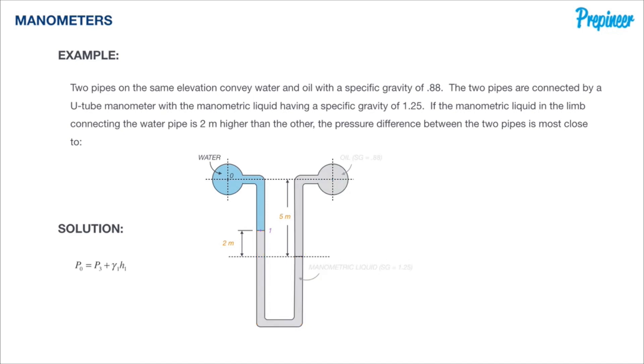From point zero we will be descending to point one at the top of the manometric liquid. Our pressure-height relationship tells us that with the negative elevation change we will be increasing the pressure. Hence we will be taking the specific gravity of water and the height in which it descends and adding this value as shown.